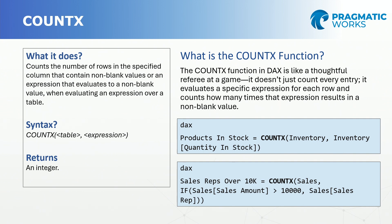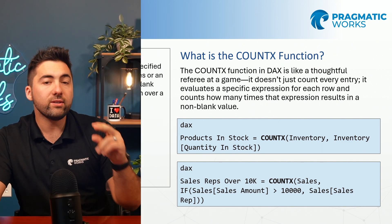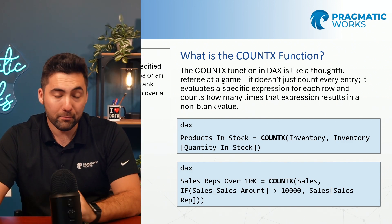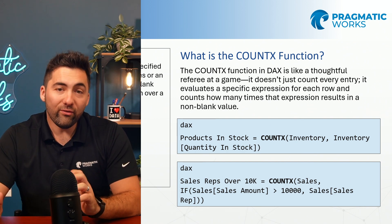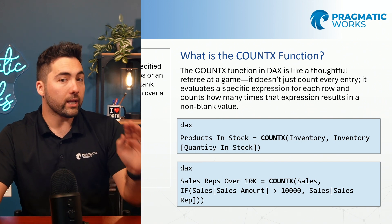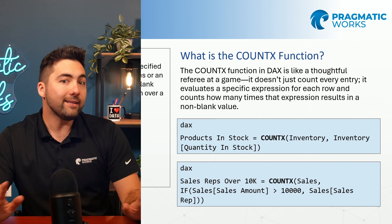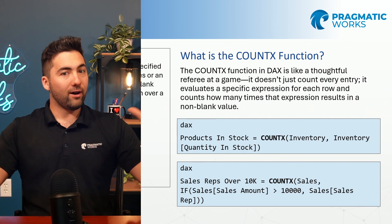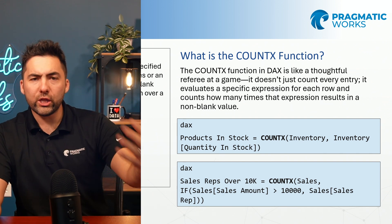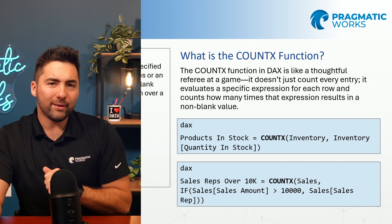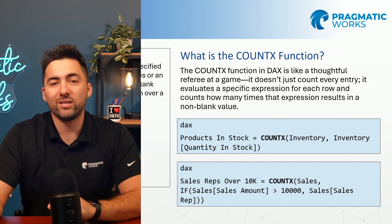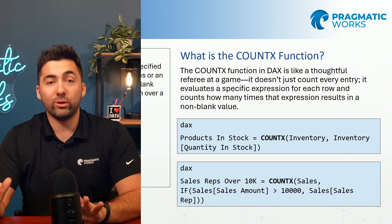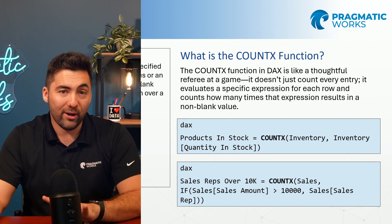The COUNTX function is kind of like a referee. If we counted up every single penalty in a game, it could be pretty tough. A referee has to look at each penalty, see it in the context of the situation — what yard it's happening at, what part of the field, all these different situations — and then produce the number.